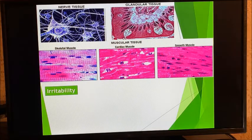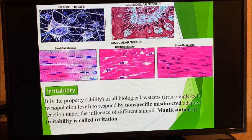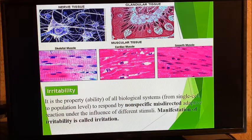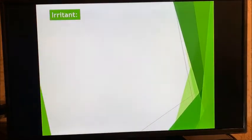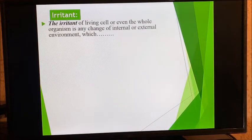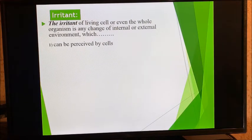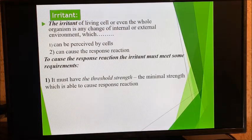Irritability is a property of all biological systems to respond by non-specific, misdirected adaptive reaction under the influence of different stimuli. When there is a manifestation of irritability, it is called irritation. There is a thin difference between irritation and excitation, though sometimes they are used interchangeably. An irritant of a cell or the whole body is any change of the internal or external environment which can be perceived by the cell and cause a response reaction.